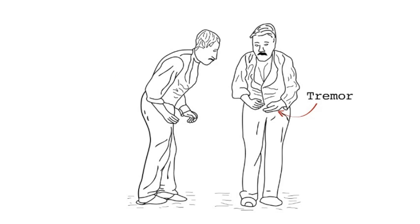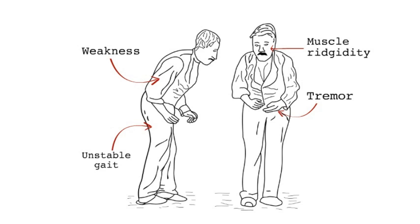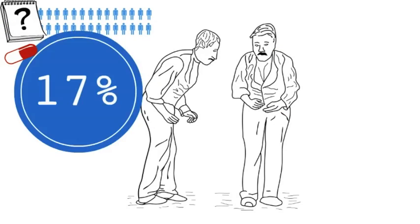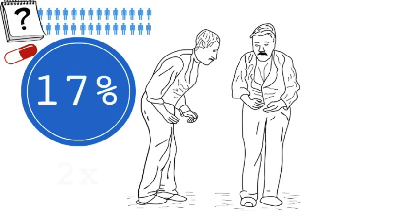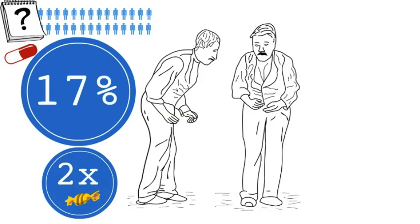Such as tremor, muscle weakness, muscle rigidity and unstable and shuffling gait. The evidence reviewed suggests that 17% of people on chlorpromazine had at least one of these symptoms. That's roughly twice as many as those on placebo.